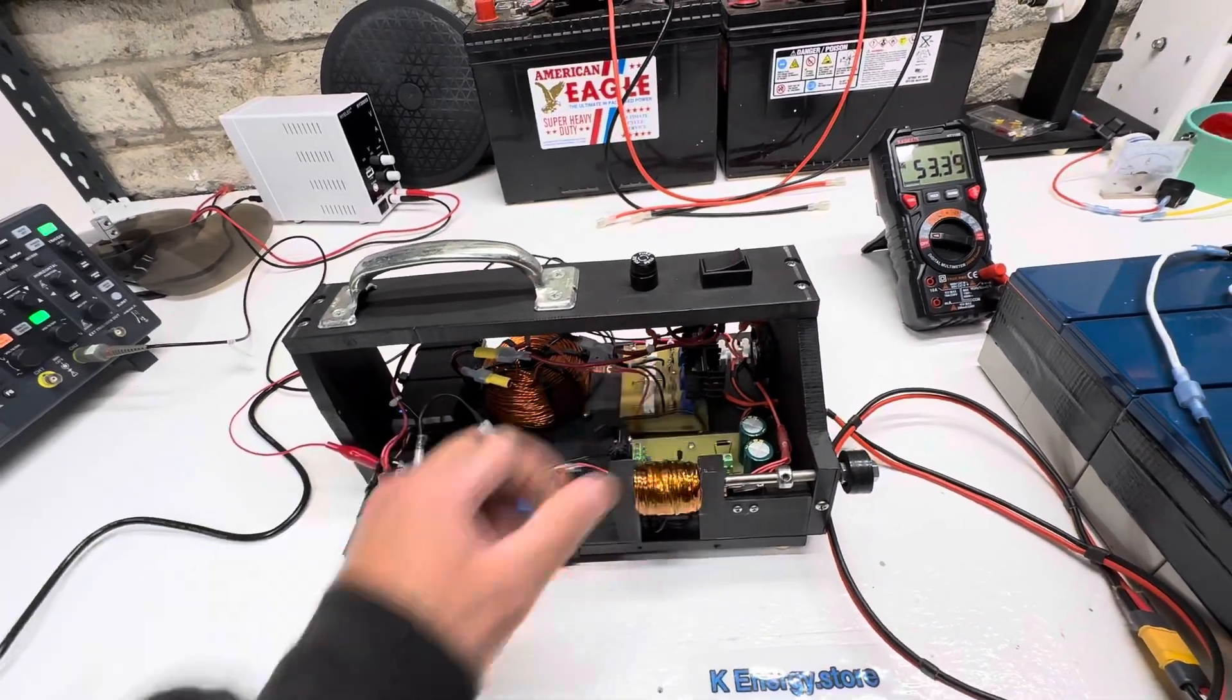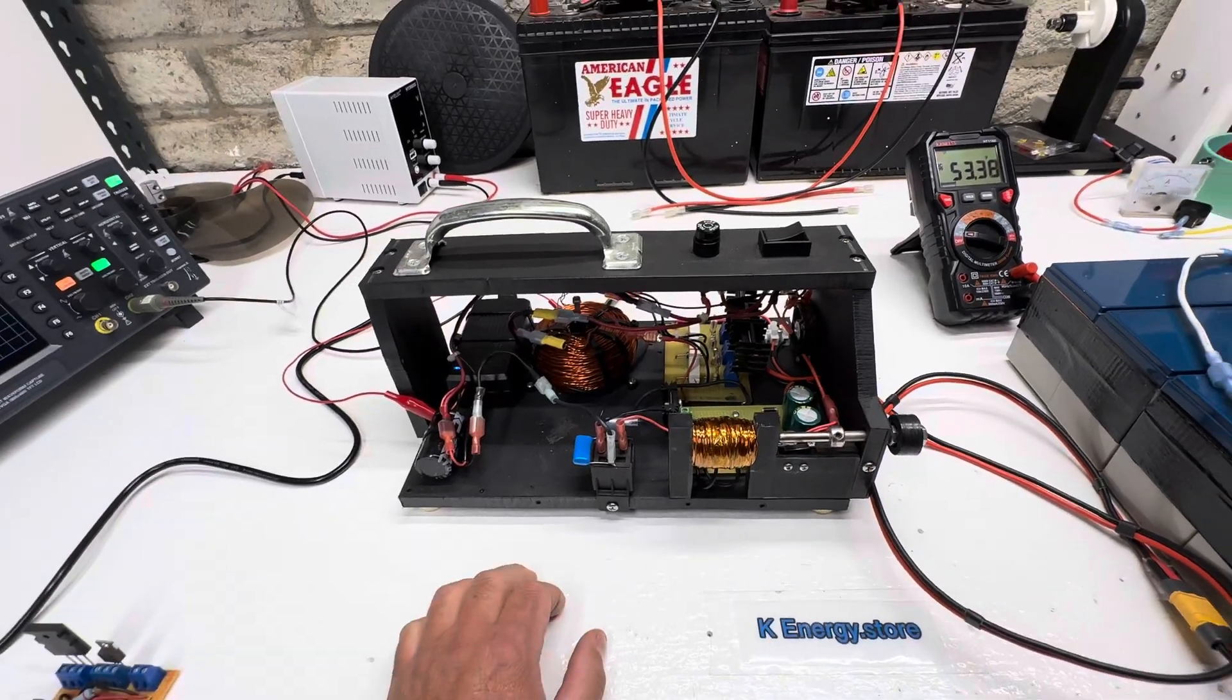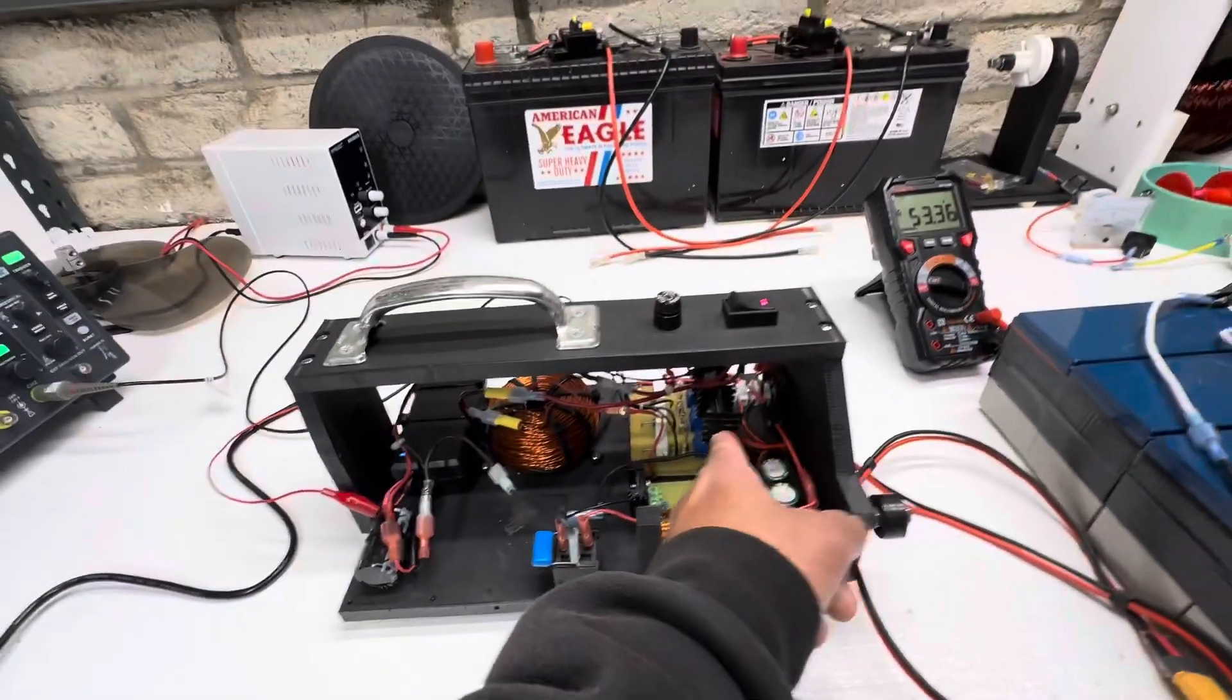You know, whatever you want to do, you just set the zener to that voltage. This is a neat little hand-built charger. You turn it on and then there's a little fan back here that turns on to help cool the transistors.